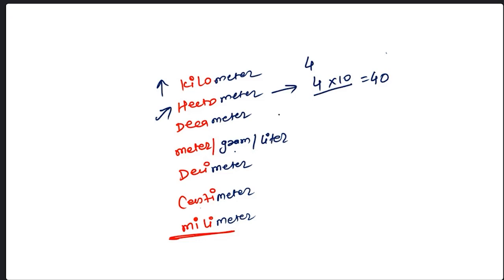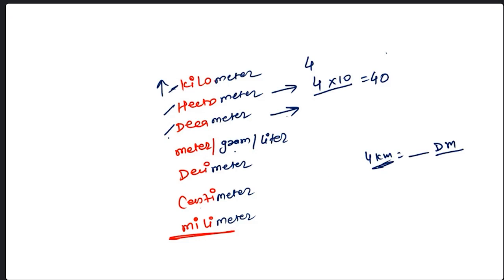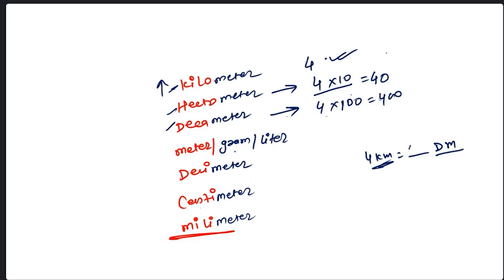Now look at this: 4 kilometers to decameter. We are at position 1 (kilo) and going to position 3 (deca). The difference is 2. So 4 into 100 equals 400. That is the answer: 4 km = 400 decameters.